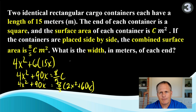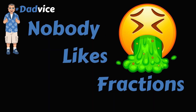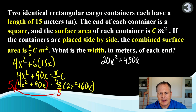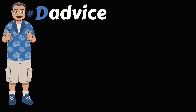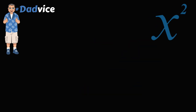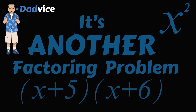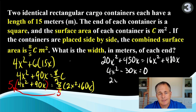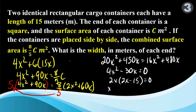Since there are fractions, let me remind you: nobody likes fractions. So we should multiply this side by 5 and move it to the other side. Now we can distribute the 8 on this side and the 5 on that side. Since there are x squareds in this problem, it's a factoring problem. So we need to move everything to one side, then factor. Here there's a GCF of 2x, leaving behind 2x minus 15 equals 0. After some quick maths, we get x equals 15 halves.